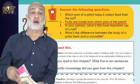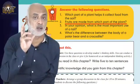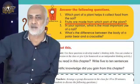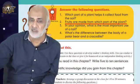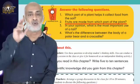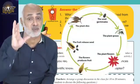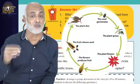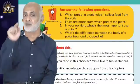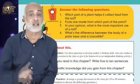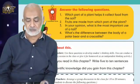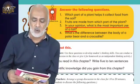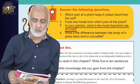Number two: fruits are made from which part of the plant? Fruits are made from the flowers. Now you have to write this in your copy as well. You have to do this work. Number three: in your opinion, what is the most important use of a tail?